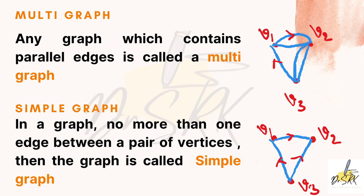What is a simple graph? In a graph where no more than one edge exists between any pair of vertices — meaning between any two vertices there is one and only one edge — such a graph is known as a simple graph. Looking at the second diagram, between vertices V1, V2, and V3 there is not more than one edge between any two pairs of vertices. That is why the second diagram represents a simple graph.